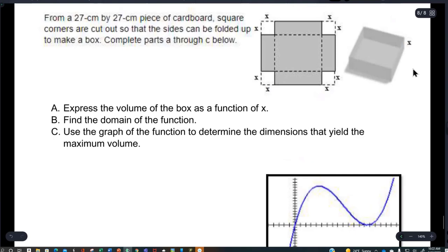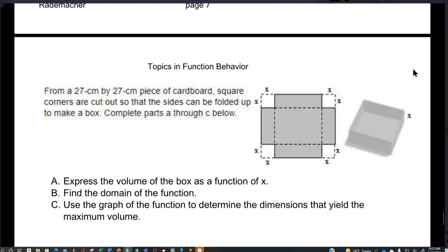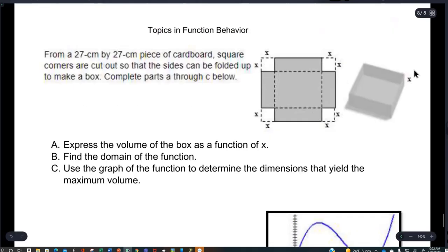This is the last problem, same kind, little more difficult. So I thought it would be better for all of us if I worked this for you. Here's what it says. From a 27 cm by 27 cm piece of cardboard, square corners are cut out and then the sides are folded up so that you get this box, a box that doesn't have a top on it. It says complete parts A through C below.